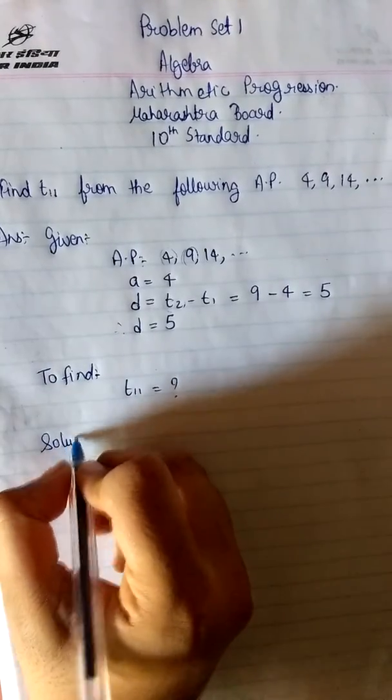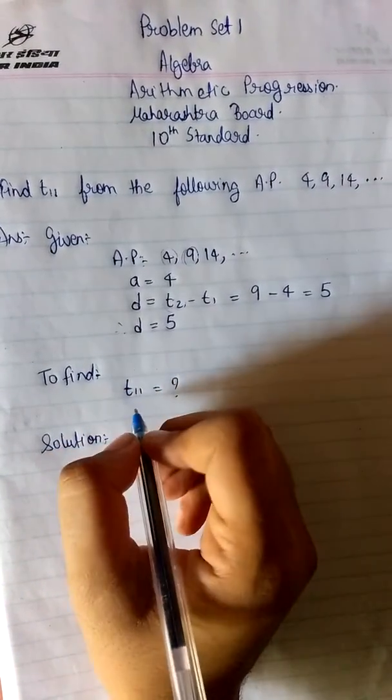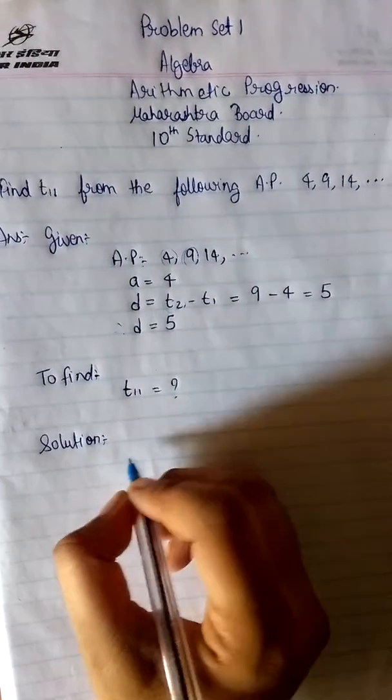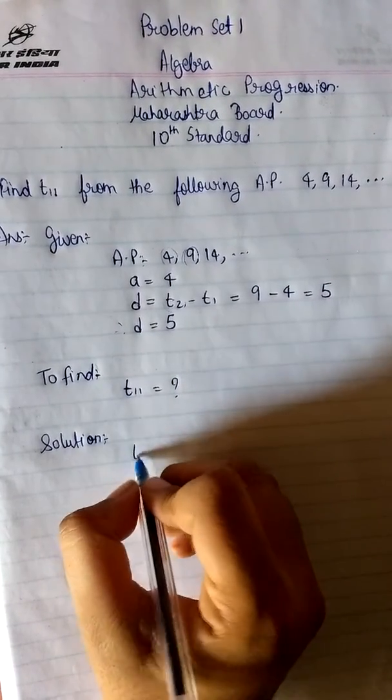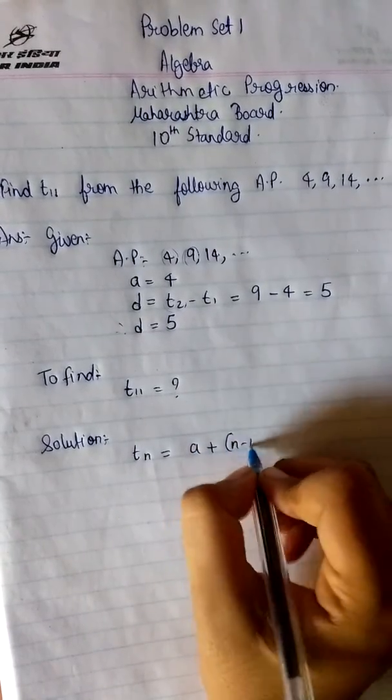Let's see the solution here. Now for finding the value of T11 we have a formula which is given in the textbook. The textbook says Tn is equals to A plus N minus 1 into D.